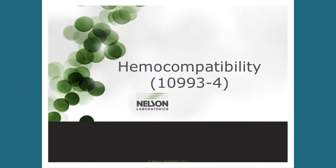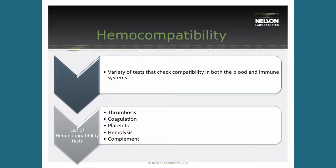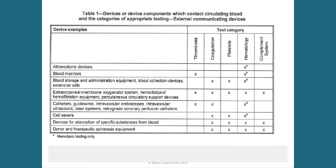Next we're going to talk about hemocompatibility. In ISO 10993-4, we have a toolbox of tests that we can use to evaluate hemocompatibility. Those tests are thrombosis, coagulation, platelets, hemolysis, and complement activation. You don't have to do all those tests for every device, but those are the toolbox we have to evaluate hemocompatibility.